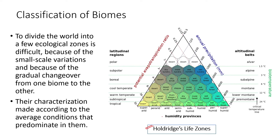Some questions have come from Holdridge Life Zones, so it's important to understand that Holdridge Life Zones are divided with respect to four factors: potential evapotranspiration ratio, annual precipitation, bio-temperature, and humidity. Evapotranspiration here refers to transpiration and evaporation with respect to photosynthesis. All four factors — evapotranspiration, precipitation, bio-temperature, and humidity — decide which area belongs to which biome.